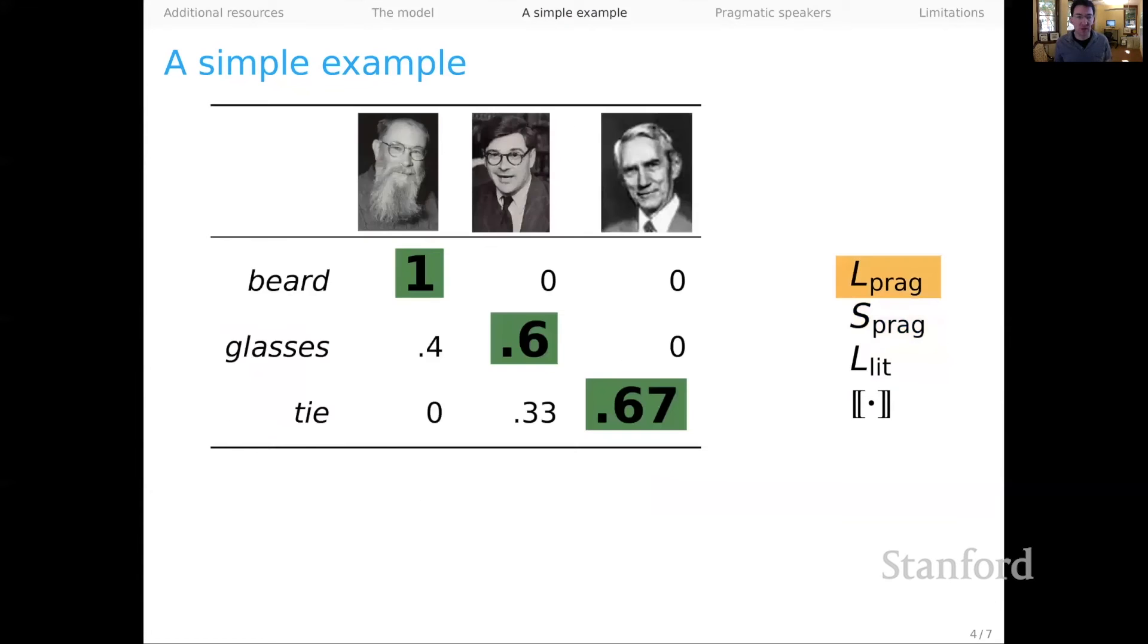And then finally, when we move to the pragmatic listener, we have what you might think of as a completely separating linguistic system. On hearing beard, infer Lewis. On hearing glasses, your best bet is Grice. And on hearing tie, your best bet is Shannon. And in this way, you can see that we started with a system that looked hopelessly ambiguous. And now in the back and forth RSA reasoning, we have arrived at a system that is probabilistically completely unambiguous. And that's the sense in which we can do pragmatic language use and end up with more efficient languages as a result of this reasoning.